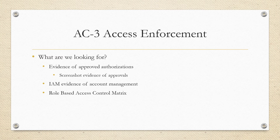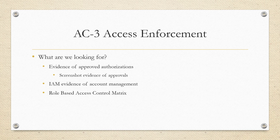Another solution is an identity and access management solution so that they can have proper account management — whether that be role-based access controls or identity-based access controls or anything like that, as long as the policies within the access control policy are being enforced. A lot of other companies will utilize a role-based access control matrix, which determines what an individual has access to based on their given role within an organization. This goes a long way in making sure that the right individual has the right amount of access without it being too much access.